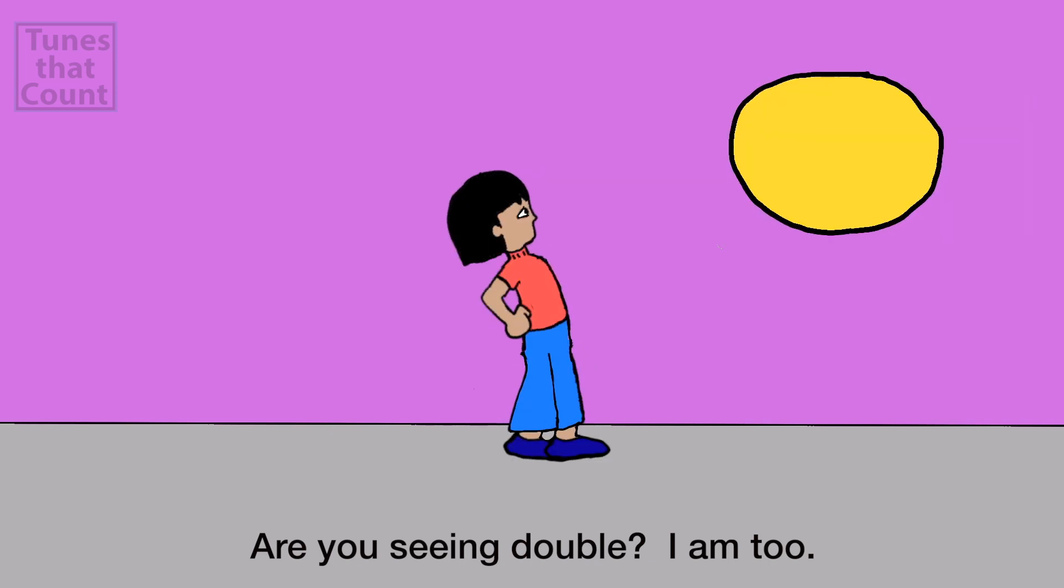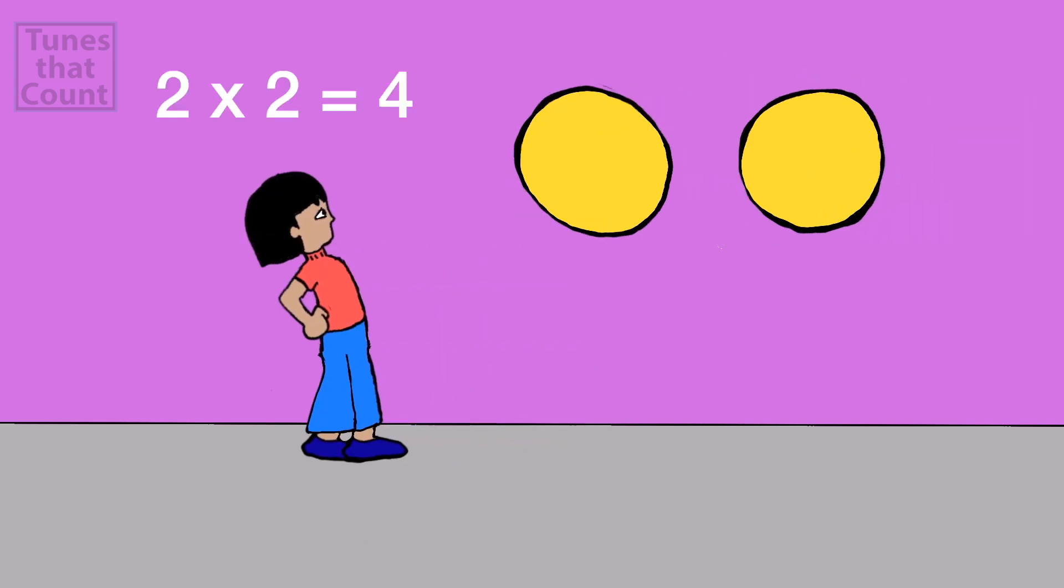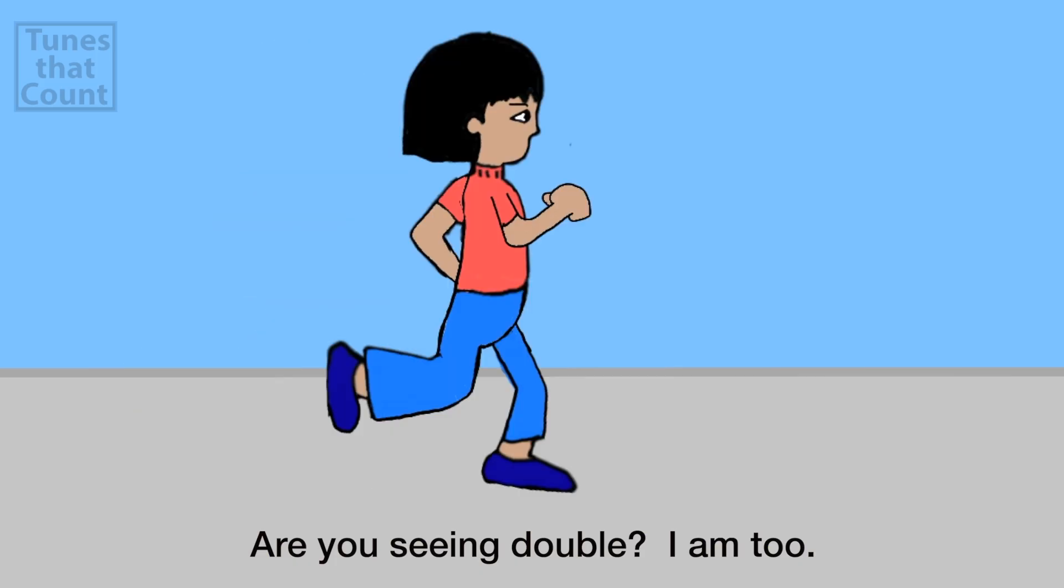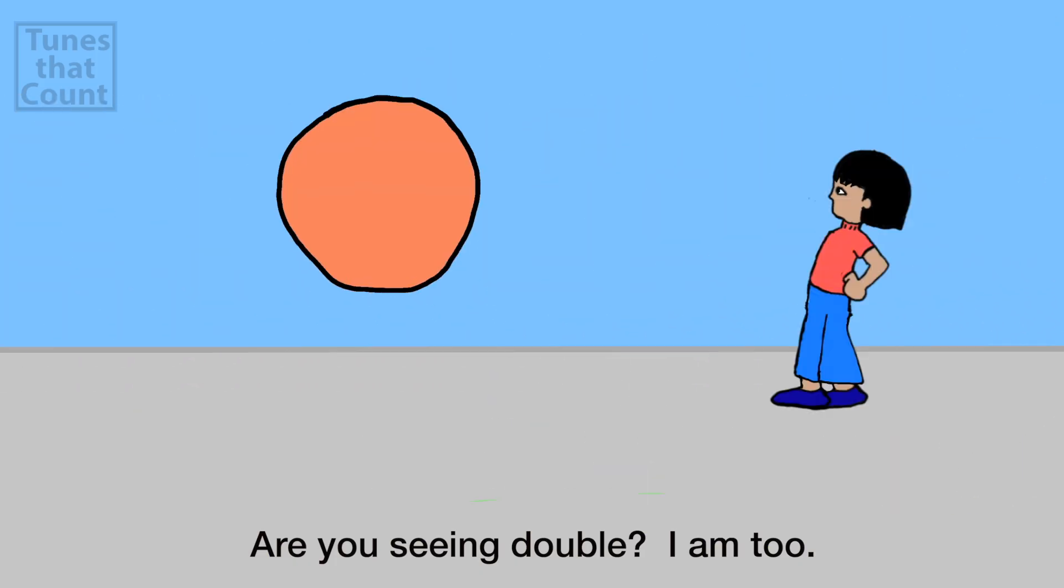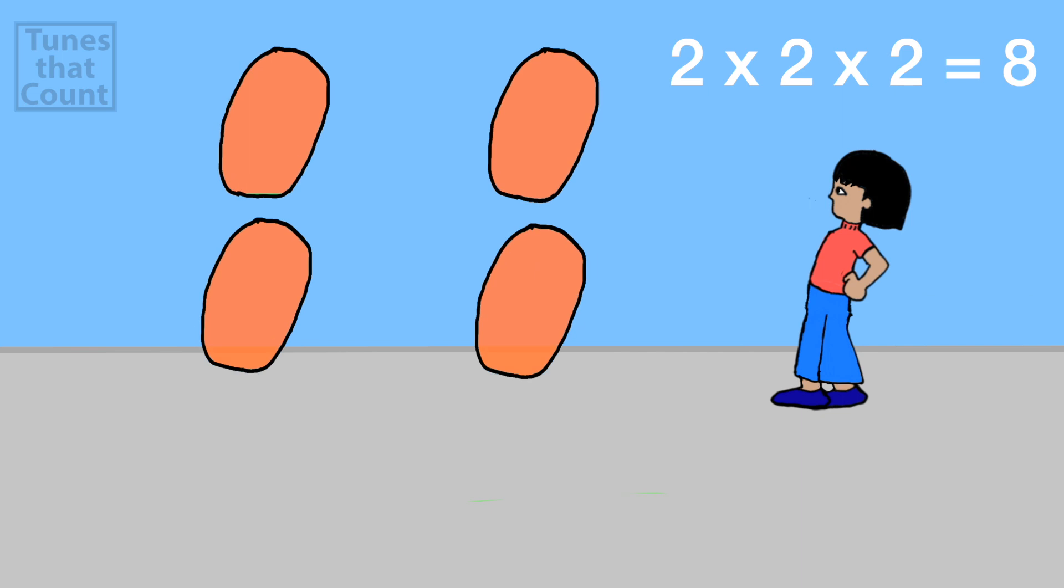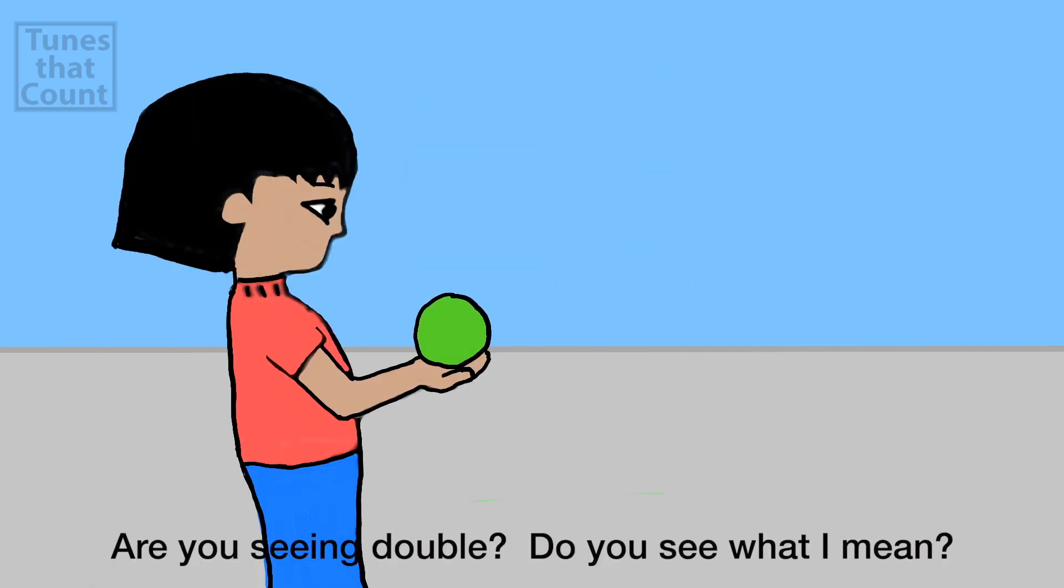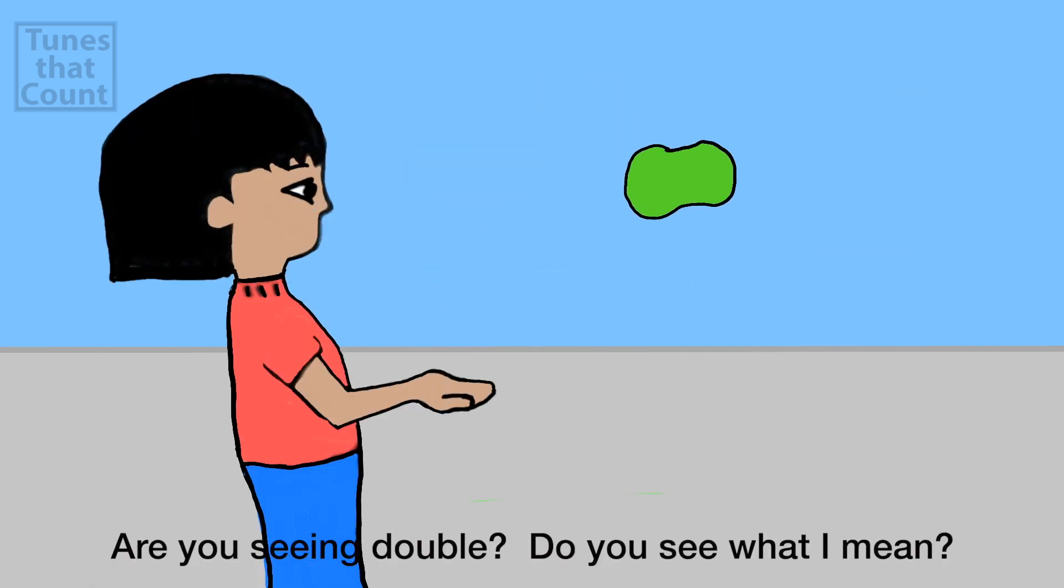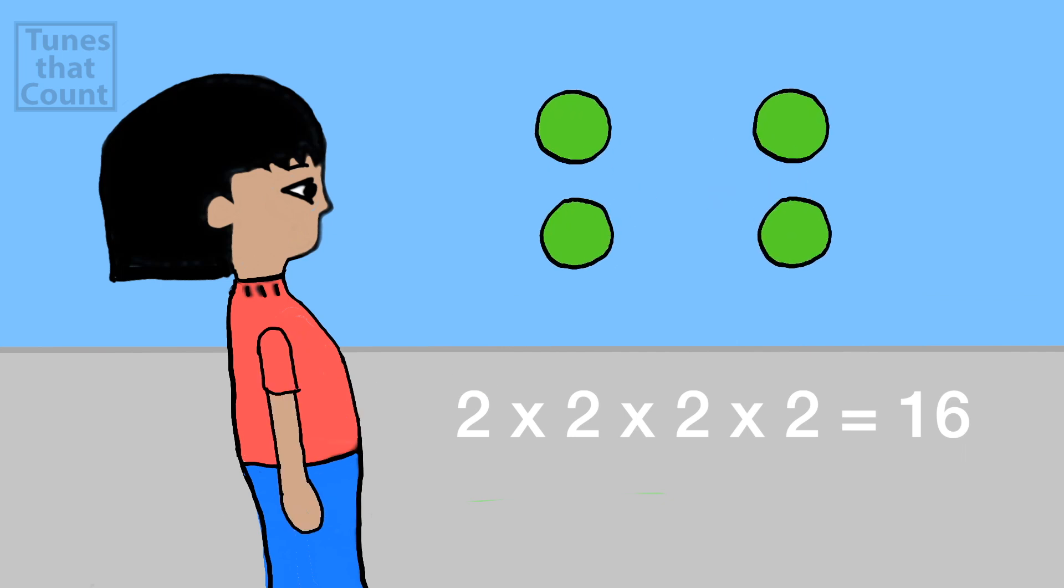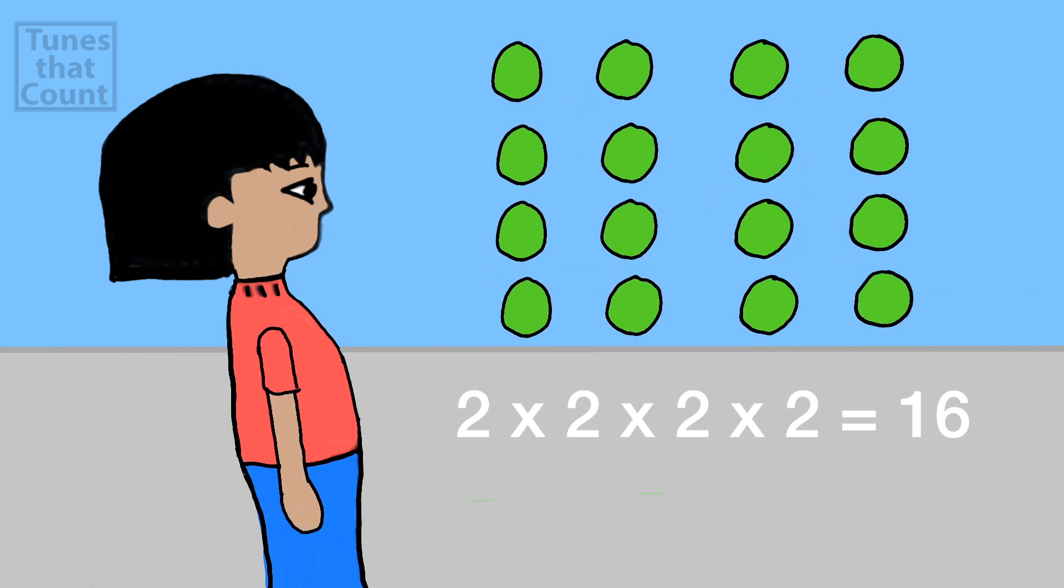Are you seeing double? I am 2, cause 2 times 2 is 4. Are you seeing double? I am 2, cause 2 times 2 times 2 is 8. Are you seeing double? Do you see what I mean? 2 times 2 times 2 times 2 is 16.